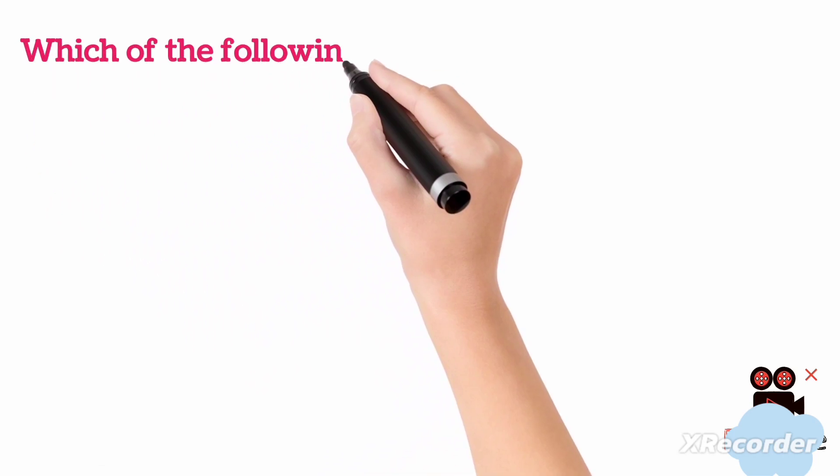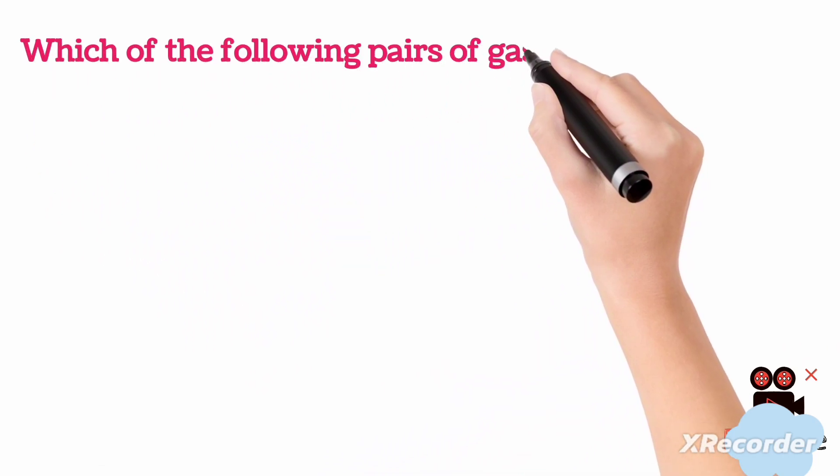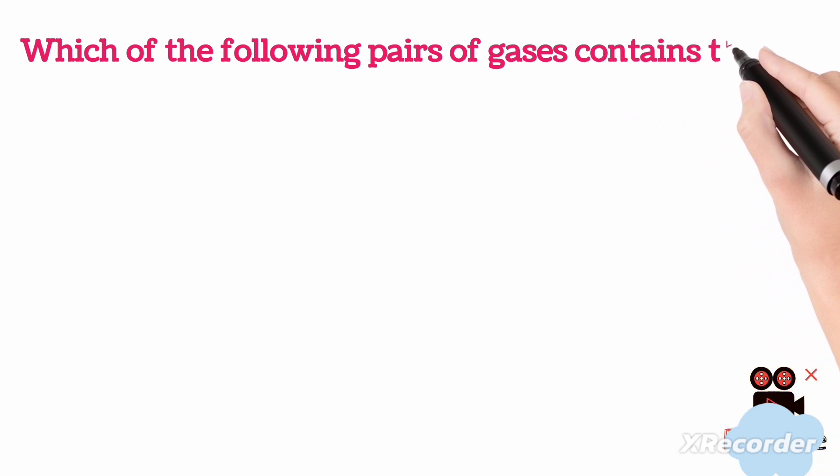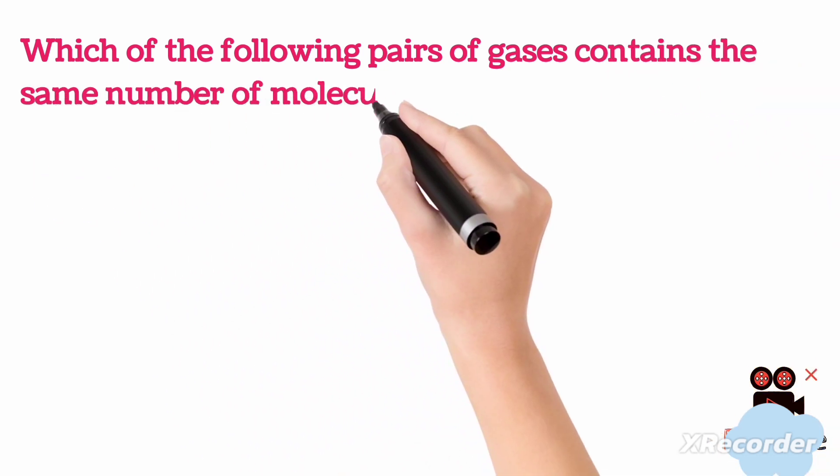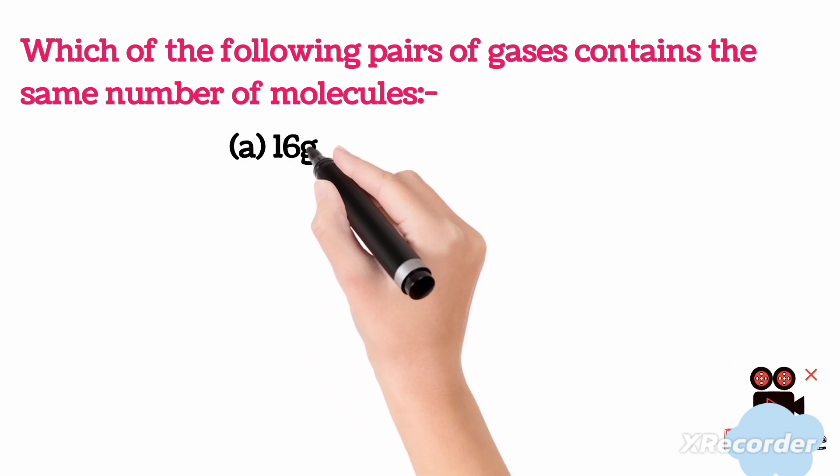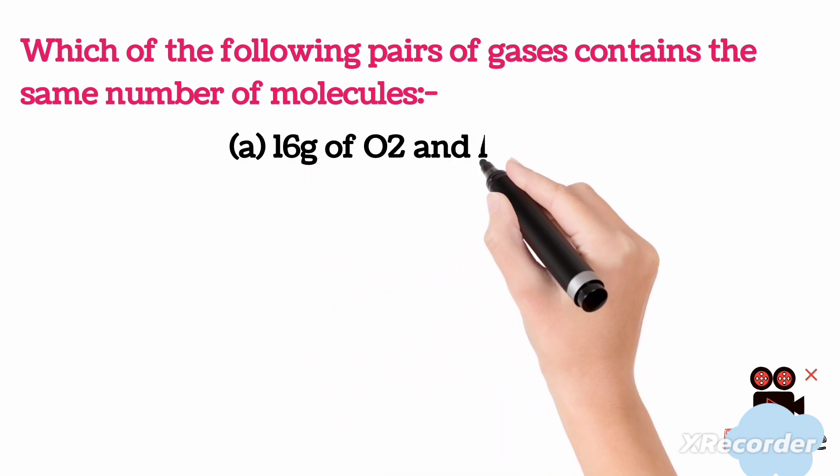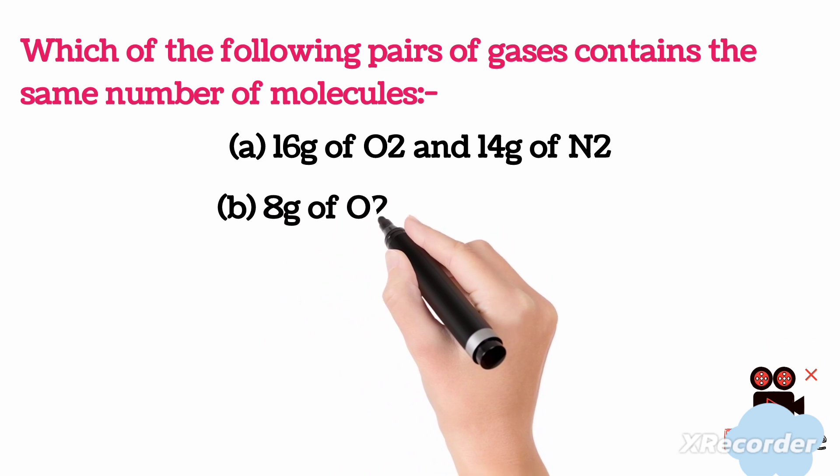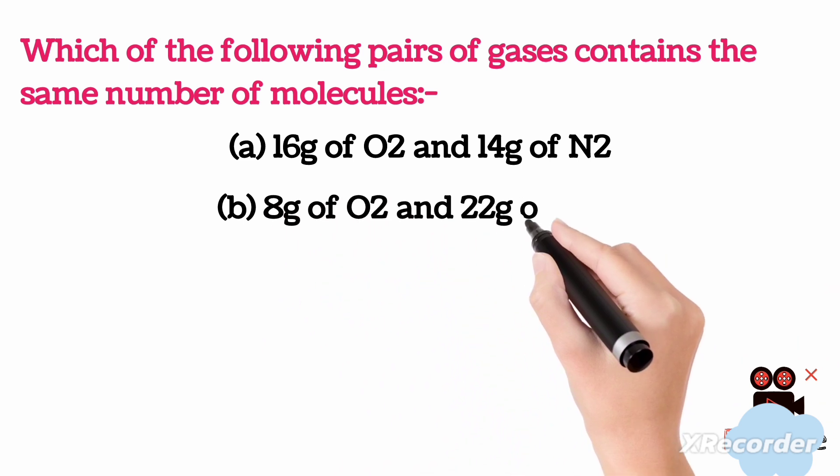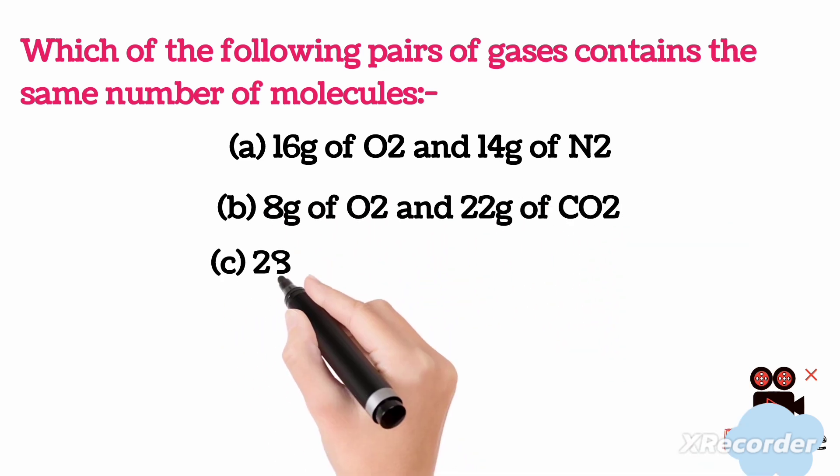This numerical is based on Level 11 CBSE chemistry, some basic concepts of chemistry. It is based on the concept of number of moles equals to the number of molecules. There are four options here, each option contains a pair of gases, and we need to find out which pair of gases contains the same number of molecules.